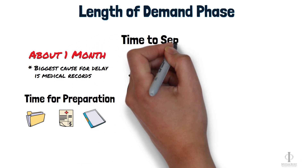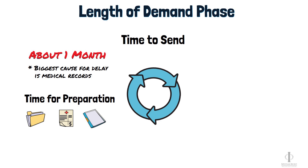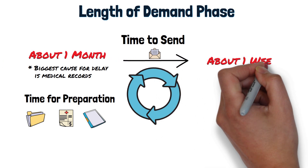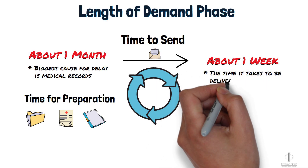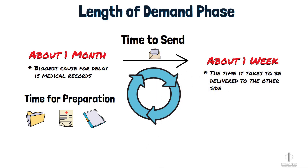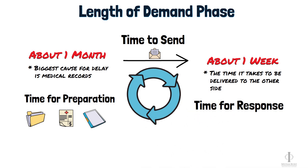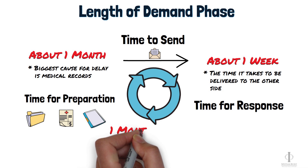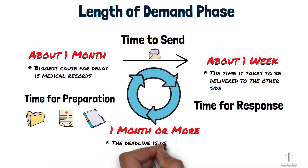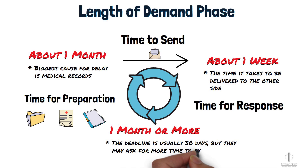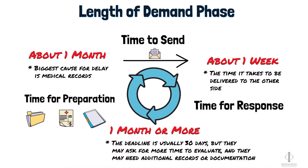Now let's talk about the time it takes to send the demand. Once we prepare the demand and send it out, the other side will typically receive it within the week. The time it takes for us to get a response from the other side will depend on the deadline we provided in the demand letter. Typically, we must give the other side 30 days to review the demand and respond. However, sometimes the insurance company may request an extension to respond or request updated records, and this can cause some delays.